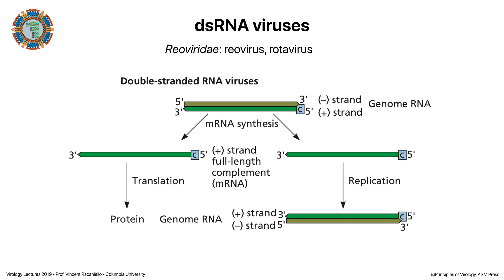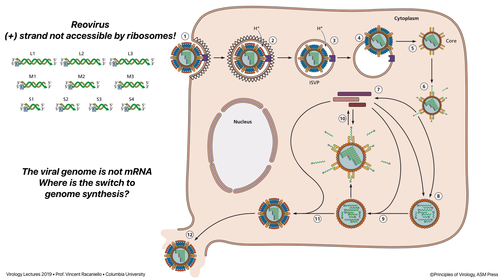The last viruses we'll consider are double-stranded RNA viruses, where the genome is double-stranded RNA. This cannot be translated, so it must be made into a messenger RNA that is then translated into protein. To replicate, that same messenger RNA is simply made double-stranded.